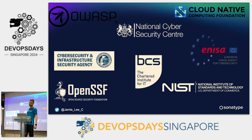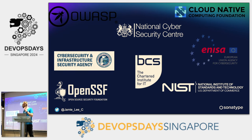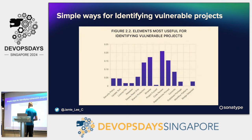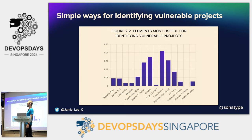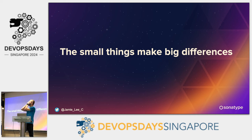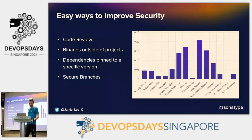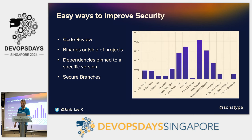There are now lots of foundations and agencies creating standards for security — most of these didn't exist 10 or 15 years ago. It's not that difficult to improve security in open source projects. Some of the most important things are code reviews — if you're not doing code reviews, please start. Branch protection is also really simple but impactful: if you're not protecting your branches on GitHub, please do. Also: don't put binaries outside your projects, and avoid pinning dependencies to a specific version.